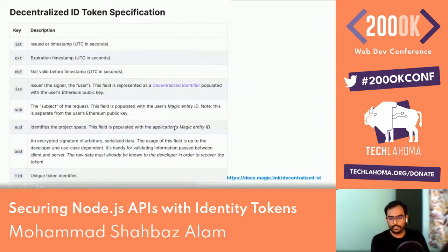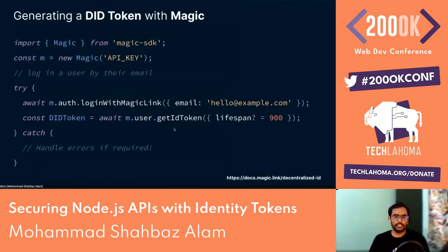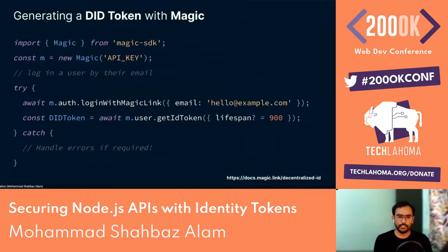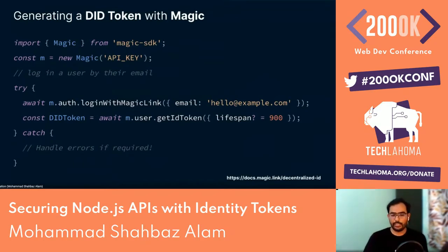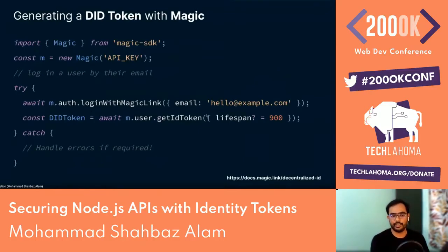The claim gets signed using Ethereum's personal sign function and then encoded so it can be transported over HTTP. Generating a DID token with Magic is very simple. With just a few lines of code you can generate one and log in a user. You import the Magic SDK, instantiate it, then call loginWithMagicLink passing the user's email. By default this generates a DID token, but you can also specify a custom lifespan — the default expiration is 15 minutes.